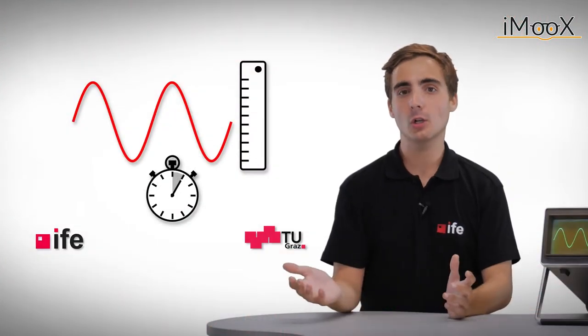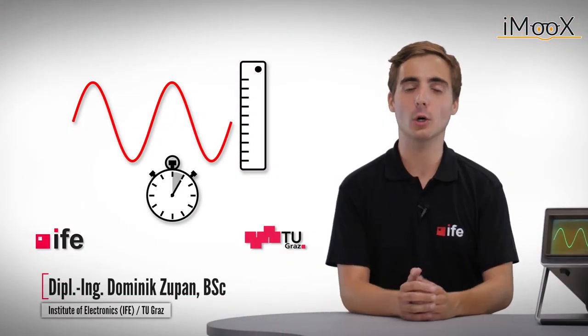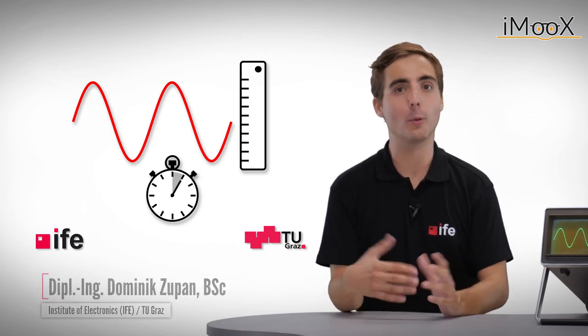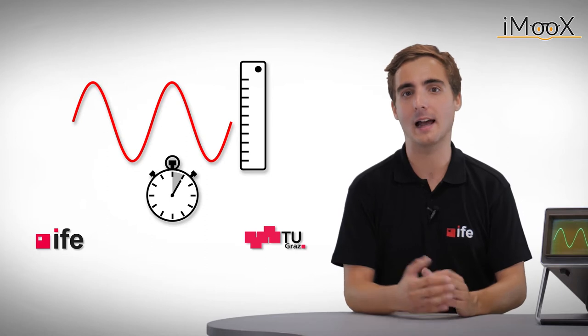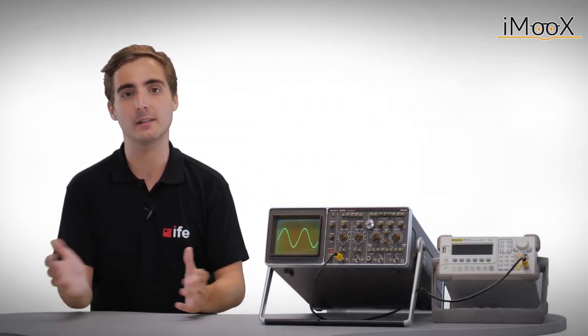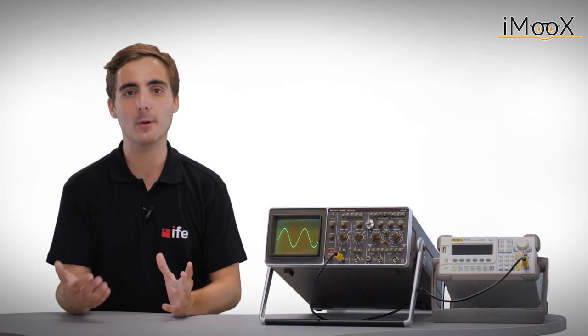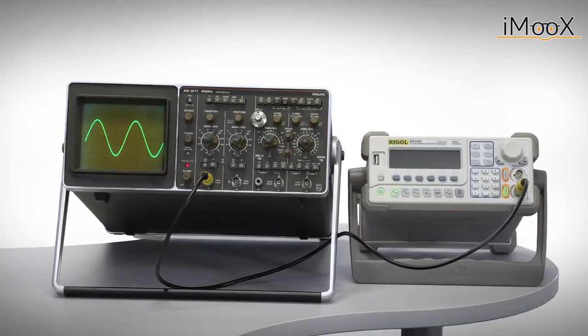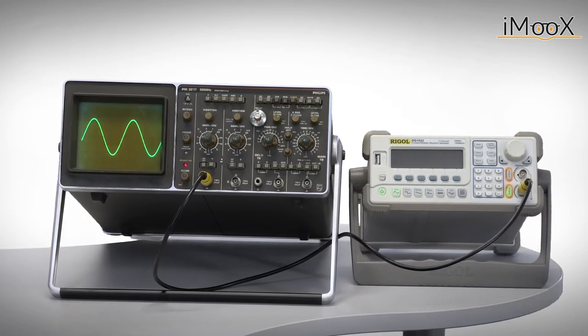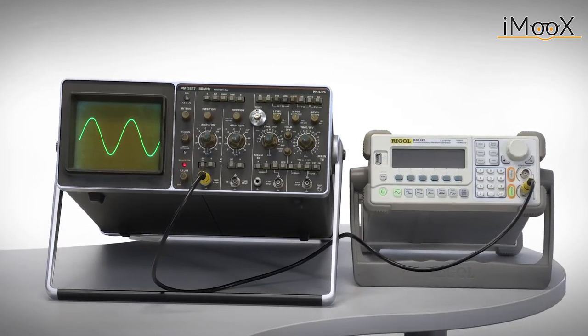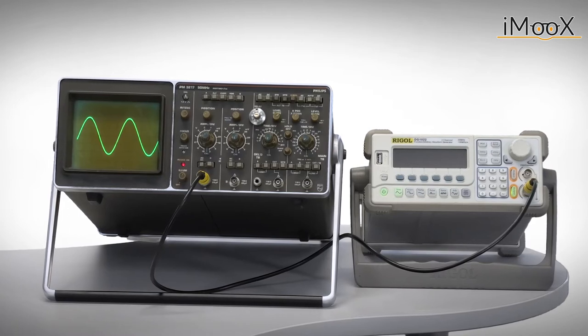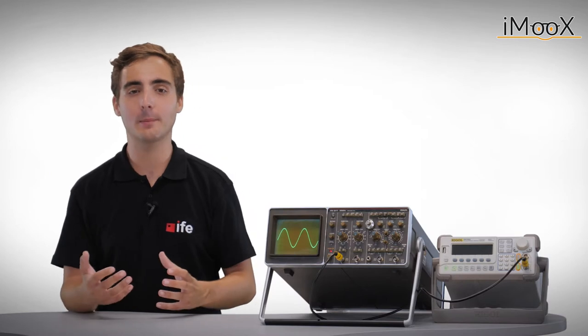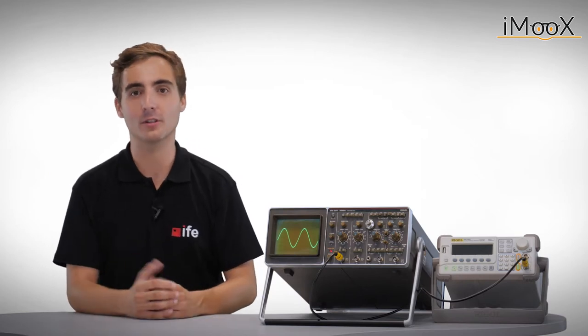Welcome again. Oscilloscopes, or simply referred to as scopes, are electronic instruments that can be used for observing and capturing time-varying voltage signals. Because of their flexibility, they play a very important role in electronic engineering laboratories. However, especially for unexperienced users and beginners, the broad range of functions that some scopes offer might be very confusing. Therefore, let us talk about the very basics of oscilloscopes.